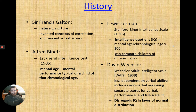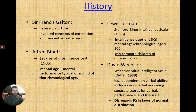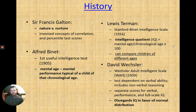Lewis Terman and his team at Stanford combined mental age with their own ideas to create the intelligence quotient — IQ. IQ is calculated as mental age divided by chronological age, multiplied by 100. So if both your mental and chronological age are 30, 30 divided by 30 equals 1, times 100 equals an IQ of 100.